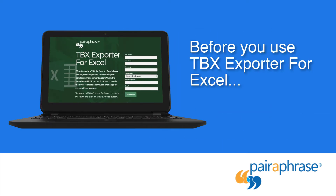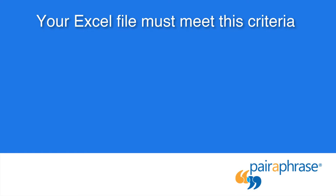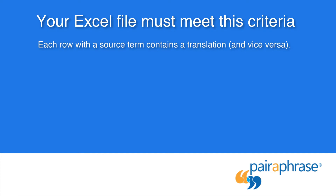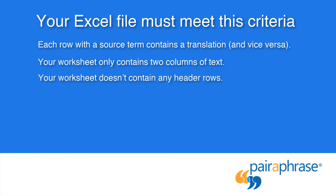Before you use TBX Exporter for Excel, compare your glossary worksheet to the following checklist to ensure you have a successful outcome. Each row with a source term contains a translation and vice versa. Your worksheet only contains two columns of text. Your worksheet doesn't contain any header rows. No typos exist.